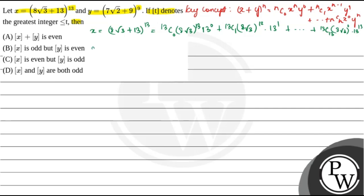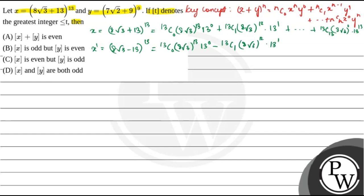Now let us consider x' = (8√3 - 13)^13. Expanding this gives: C(13,0)·(8√3)^13·13^0 - C(13,1)·(8√3)^12·13^1 + ... minus C(13,13)·(8√3)^0·13^13, with alternating signs.